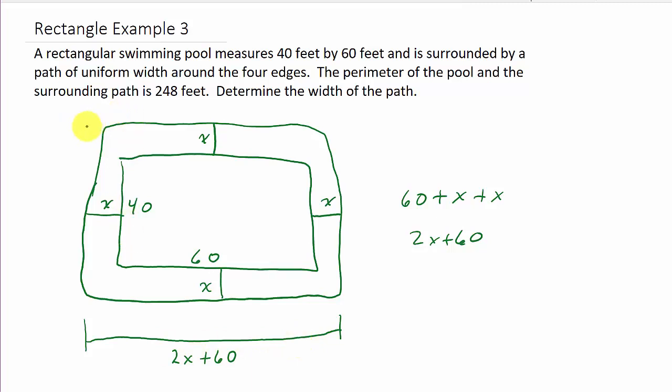This would be the same. This distance here would be 40 plus x plus x. Well, x plus x is 2x, so this would be 2x plus 40. And then also this would be 2x plus 40, and this would be 2x plus 60.